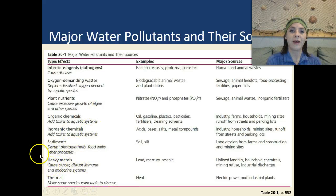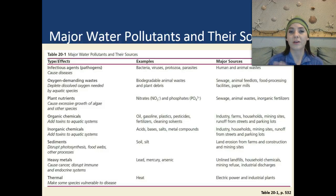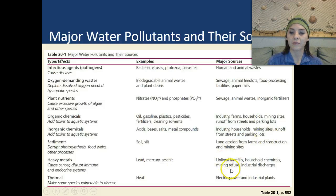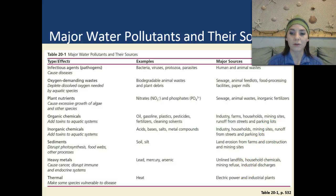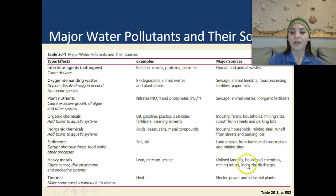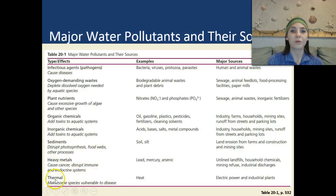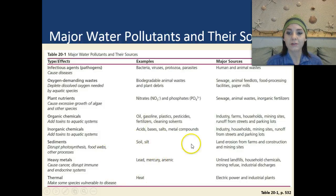We have heavy metals — if we ingest too many of them, they can cause cancer, disturb our immune systems, and disturb our endocrine systems. Examples of heavy metals include lead, mercury, and arsenic. These can originate from unlined landfills — if we don't line the landfills well, chemicals can soak through into our water supply — as well as household chemicals, mining refuse, and industrial discharges. And then we have thermal pollution, which makes some species vulnerable to disease. Thermal pollution is essentially heat, and the major sources are electric power and industrial plants.